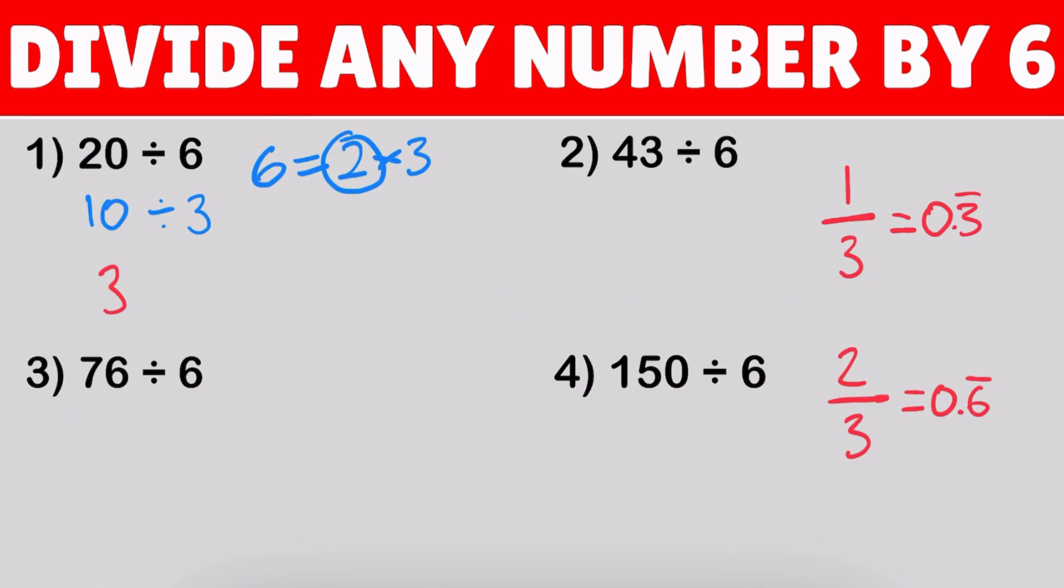So, because we have a remainder of 1, we're going to write this down as 1 over 3. That is the rest of our quotient. Now, as we've seen right here, 1 third is equal to 0.3 repeating. So, we write it as 3.3 repeating. And, as it turns out, this is our answer.